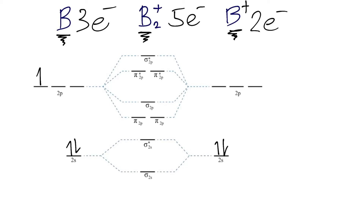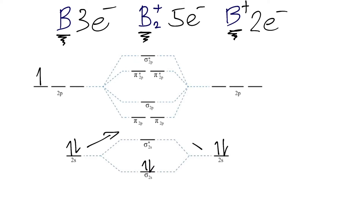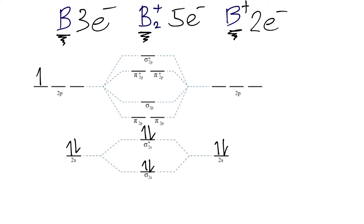Now that our atomic orbitals are filled in, we can start filling in our molecular orbitals. We again start with the lowest energy molecular orbitals, which is the σ2s bonding molecular orbital — that holds two electrons. Then the remaining two electrons associated with these 2s atomic orbitals rise up to the higher energy σ2s* antibonding molecular orbital. This part of the MO diagram is now complete, so we can fill in the upper part associated with the p orbitals.